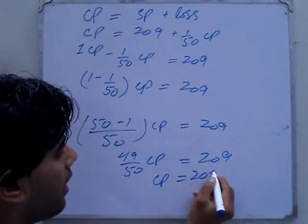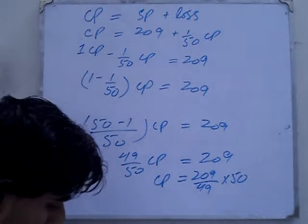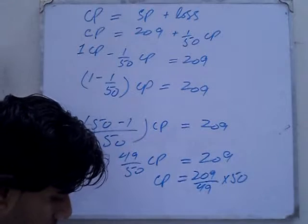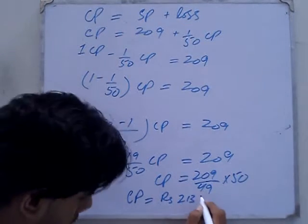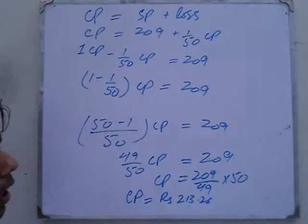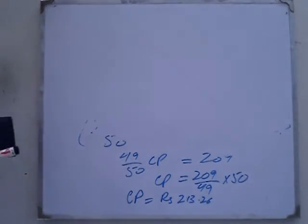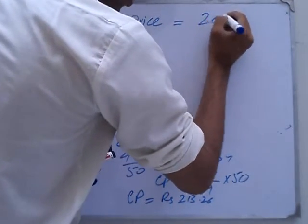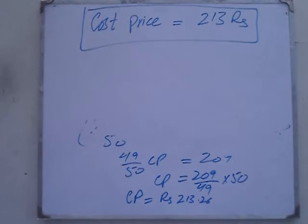What will the cost price be? Cost price equals 209 over 49, because 50 comes up to multiply on the other side. So when we calculate: 209 into 50 divided by 49, the cost price comes out to Rs. 213, approximately Rs. 213.26 or 266.25.